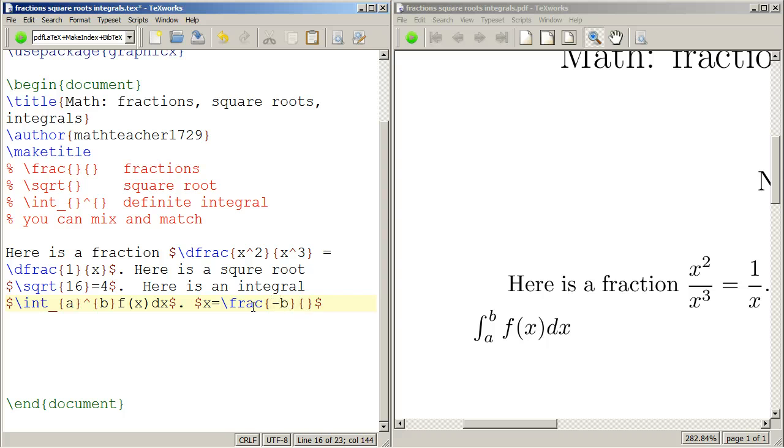I'm sorry, minus b. Pm is the plus minus code. Square root b squared minus 4ac all over 2a. And we'll typeset that.